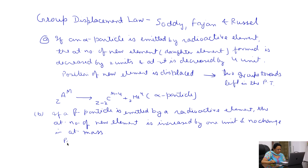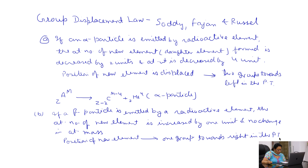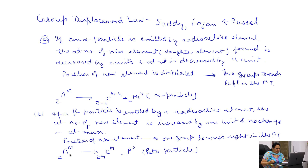The position of the new element is displaced by 1 group towards the right in the periodic table. For example, if element A has atomic number Z and atomic weight M, and 1 beta particle is emitted, then the atomic number is increased by 1 unit and there is no change in mass number. If A is present in the 4th group, then C must be in the 5th group.